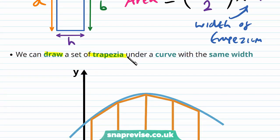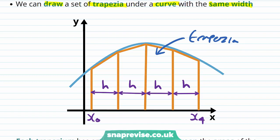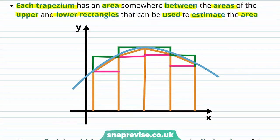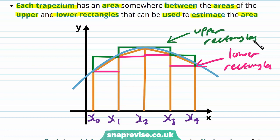We can draw a set of trapezia under a curve with the same width. Here we have a curve, and we can split up our endpoints x0 and x4 and draw trapezia of width h. These all have the same width h, giving us other endpoints x1, x2, and x3. Each trapezium has an area somewhere between the areas of the upper and lower rectangles used to estimate the area. We can use a set of lower rectangles or upper rectangles, giving a lower and upper bound respectively.